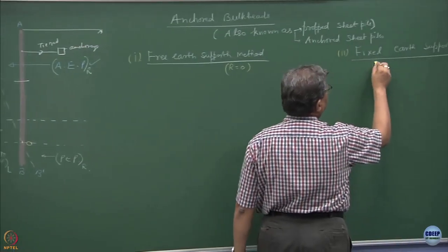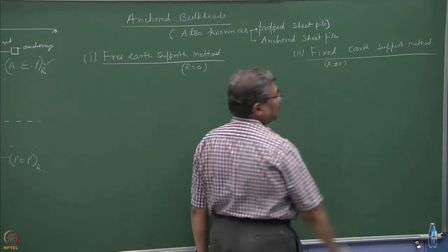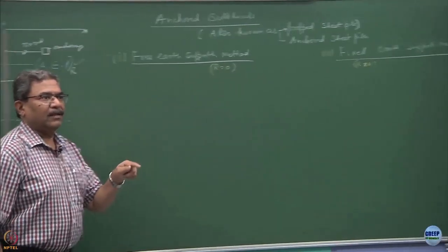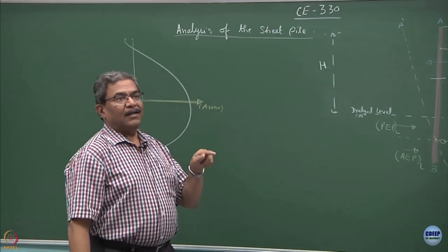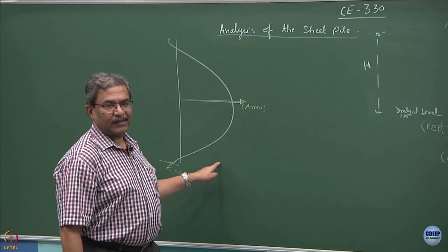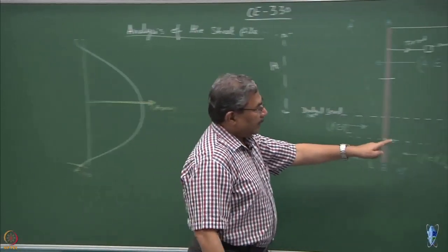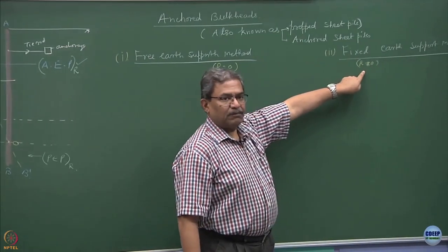In the second case, r is not equal to 0, it is fixed, there is a reaction, you are putting a constraint. So, this is free to deflect and rotate, this one is fixed because of the reaction which is imposed on this.